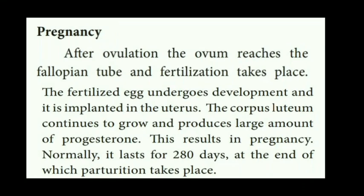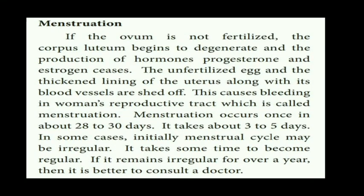Next is menstruation. If the ovum is not fertilized by the sperm, the corpus luteum begins to degenerate and the production of hormones progesterone and estrogen decreases. The unfertilized egg and the thickened lining of the uterus along with its blood vessels are shed off, causing bleeding in the women's reproductive tract, which is called menstruation. Menstruation occurs once in about 28-30 days and takes about 3-5 days. Initially, the menstrual cycle may be irregular but takes some time to become regular.